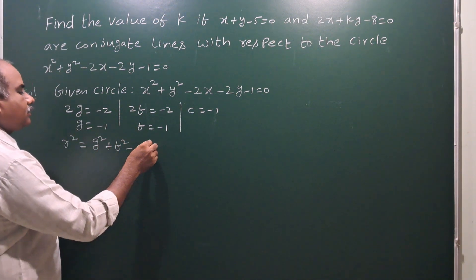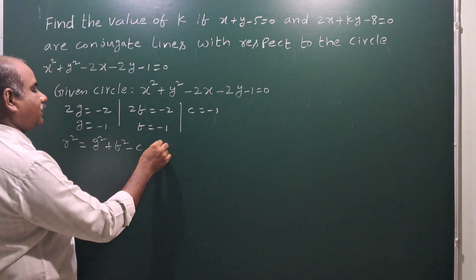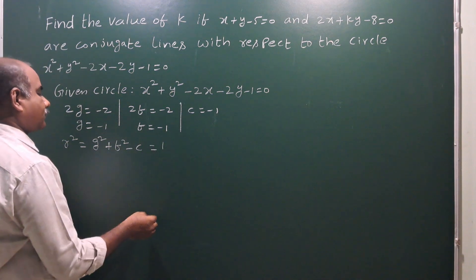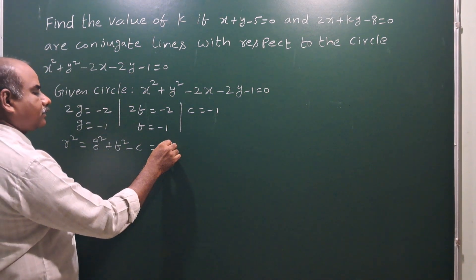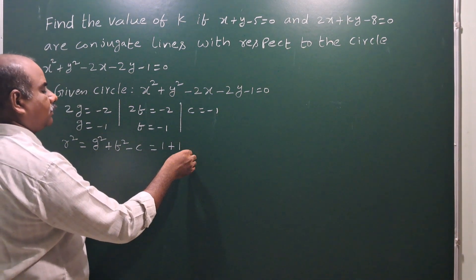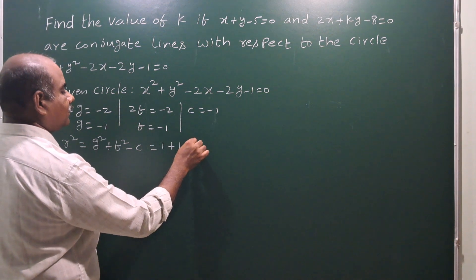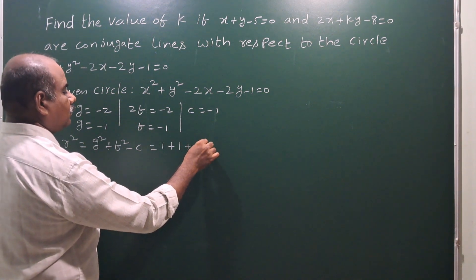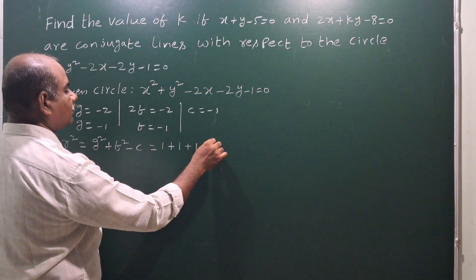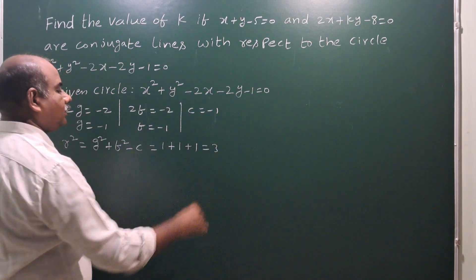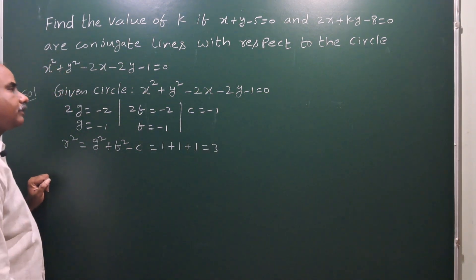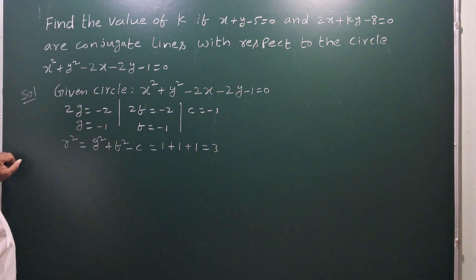So g squared means minus 1 whole squared, which is plus 1. f squared means minus 1 whole squared, which is plus 1. Minus c means minus into minus, which is plus 1. So 1 plus 1 plus 1 gives us r squared equals 3.